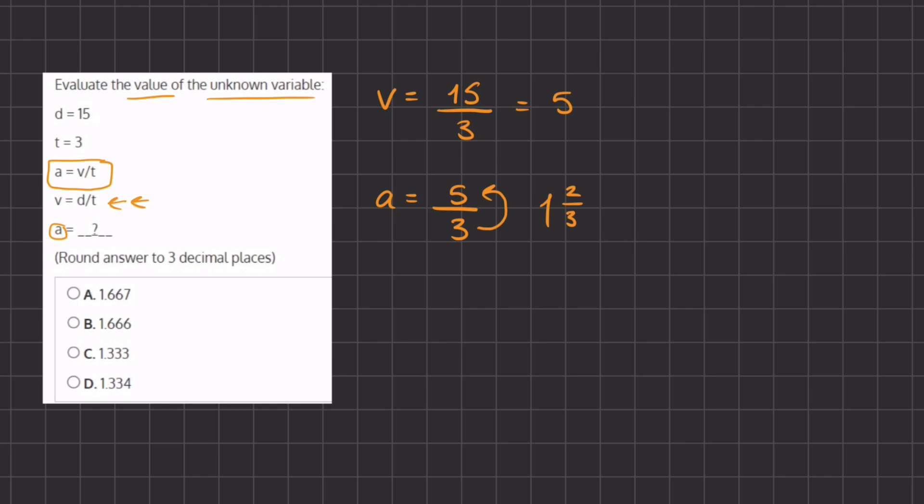We need to convert it into a decimal. This 1 is going to be our whole number, so we have one point. And then 2 divided by 3 gives us 0.666, and it's going to continue forever.